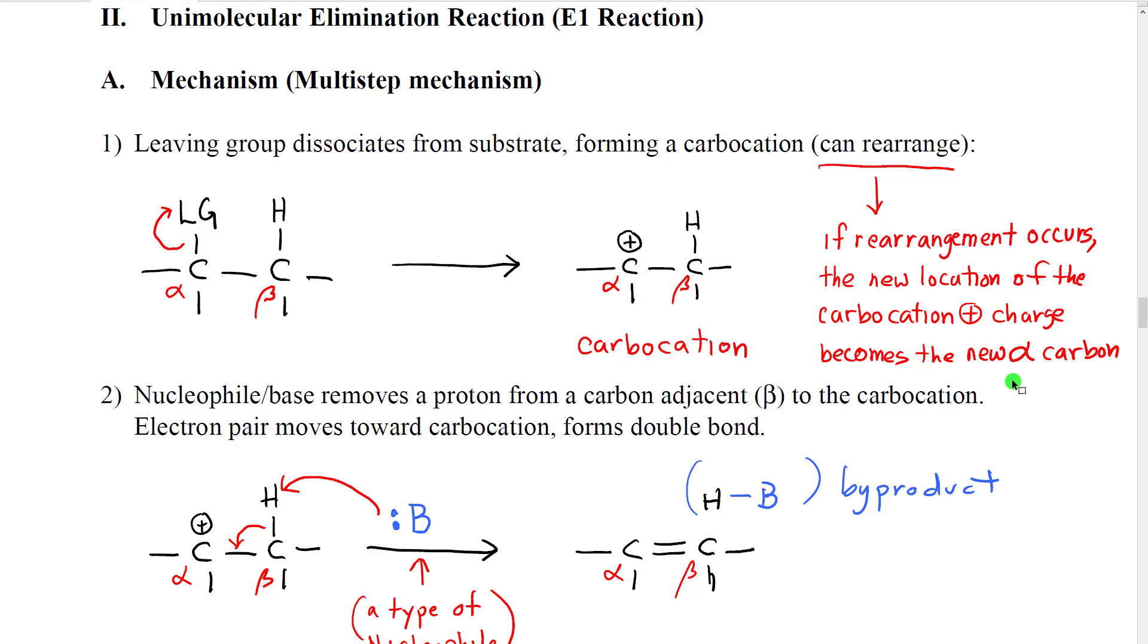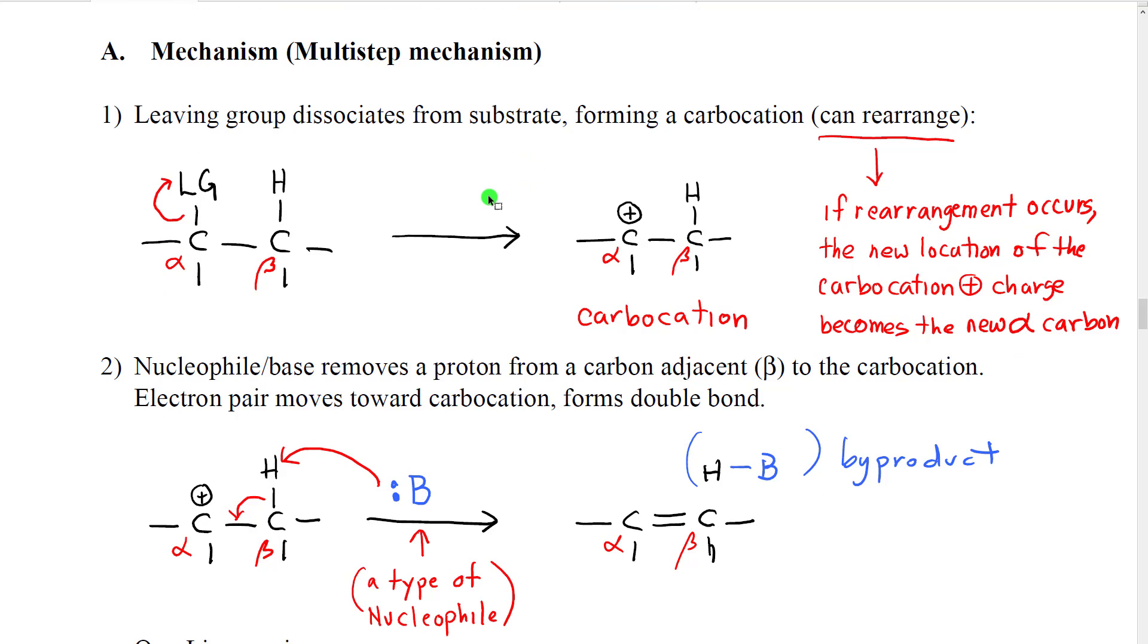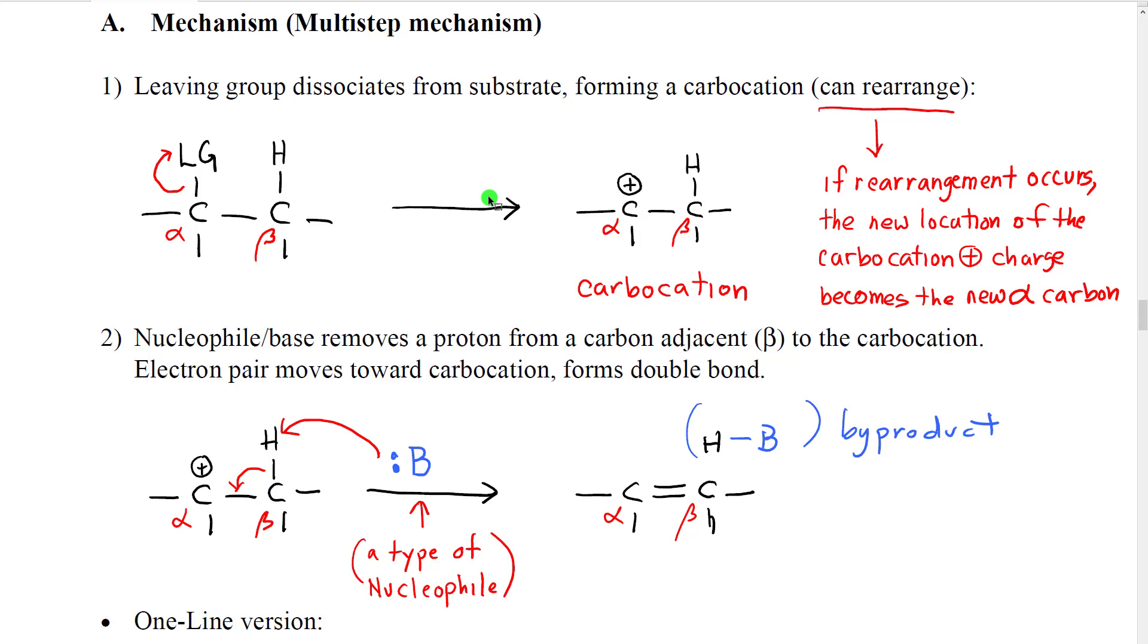We're now going to look at the unimolecular elimination reaction, which is the E equivalent of the SN1. So we call it the E1. The unimolecular reaction mechanism is a multi-step mechanism, very similar to the way that the SN1 mechanism was a multi-step mechanism.